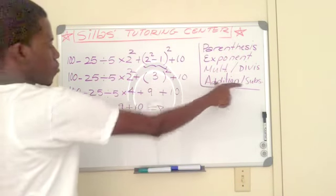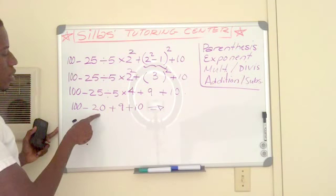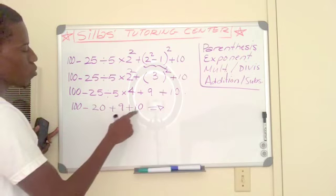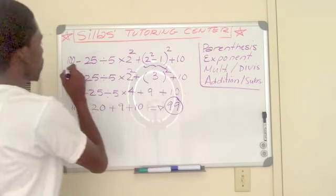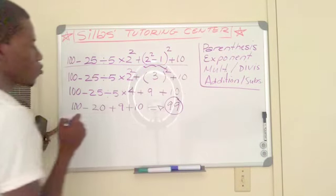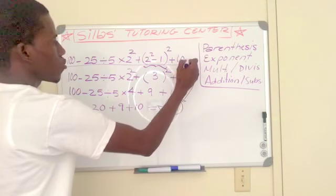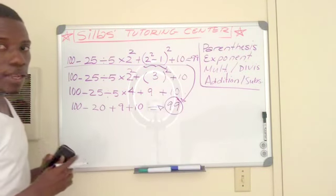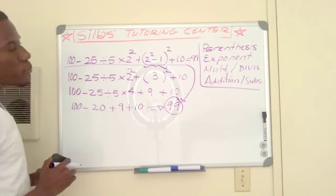Now addition and subtraction — I can do this at the same time. So 100 minus 20 is 80, plus 9 is 89, plus 9 is 99. The entire algebraic expression reduces to 99, so this is equal to 99.